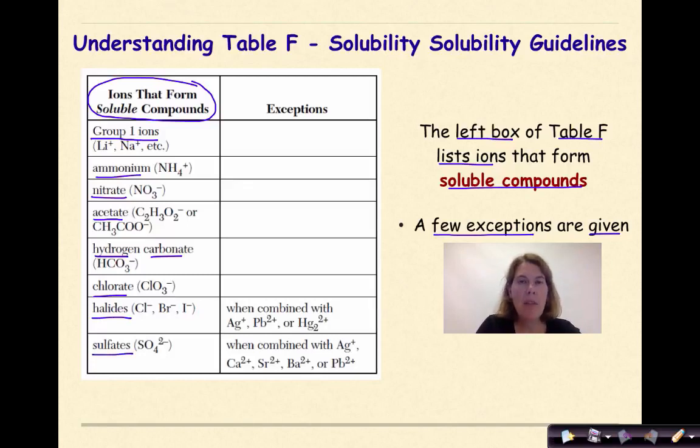So, any of these ions, if they are found in a compound, and they are placed in water, they will dissolve into mobile ions, unless, in terms of the halides here, if the halides are bound to either Ag+1, Pb+2, or Hg2+2, which is known as dimercury, these will be insoluble.